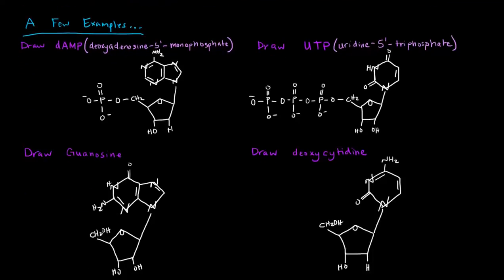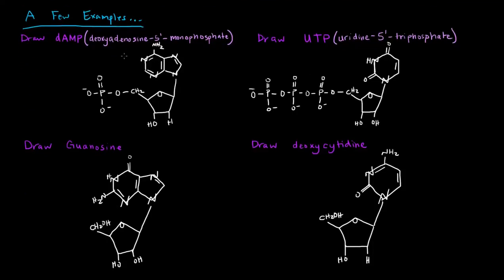If you were asked to draw dAMP, which is deoxyadenosine monophosphate, or more specifically deoxyadenosine five prime monophosphate. The deoxy means that your sugar is going to be deoxyribose, and we know that because of this here. This two prime carbon on the ribose sugar has no OH group, has just the H group. So that's the deoxy.